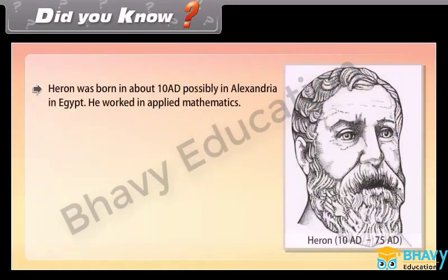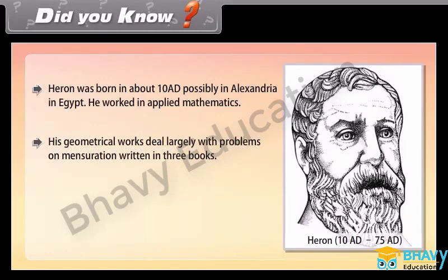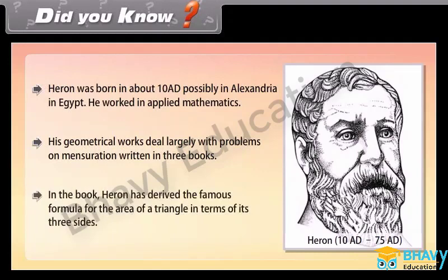Did you know: Heron was born in about 1080, possibly in Alexandria in Egypt. He worked in applied mathematics. His geometrical works deal largely with problems on mensuration, written in three books. In the book, Heron derived the famous formula for the area of a triangle in terms of its three sides.